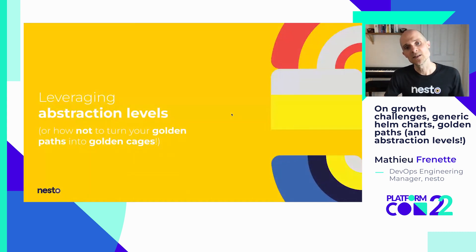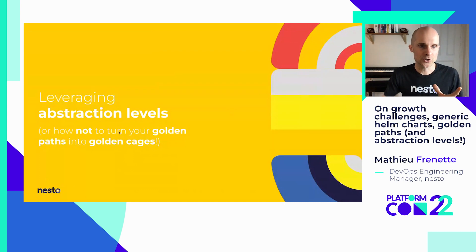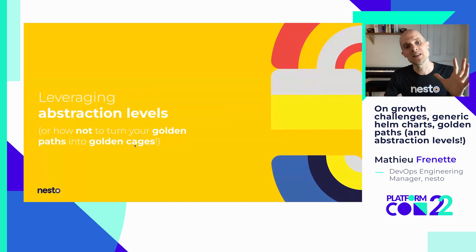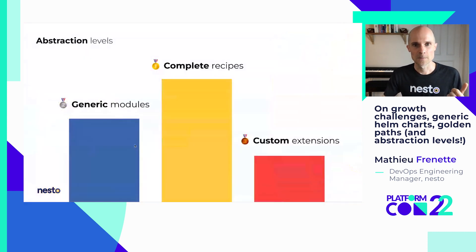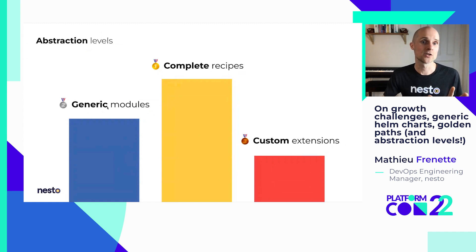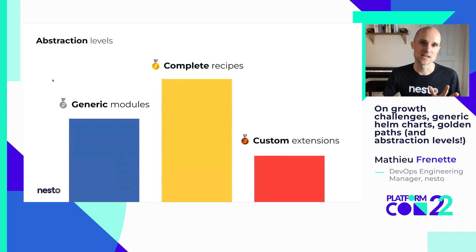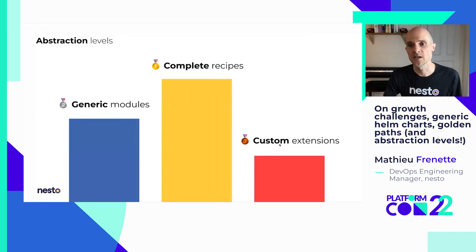When we created that generic Helm chart, we figured that in order not to turn our golden paths into golden cages, we needed to define different abstraction levels at which developers could work. There's the first level: complete recipes. Then, if that doesn't work, developers can fall back to generic modules that they assemble themselves. And then, if those just don't cut it, they can fall back to arbitrary custom extensions.